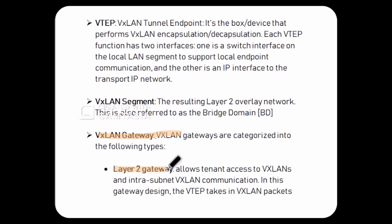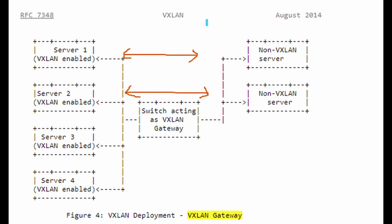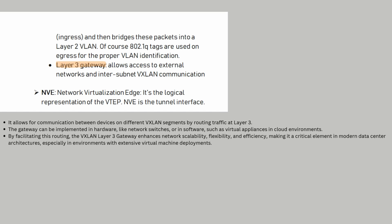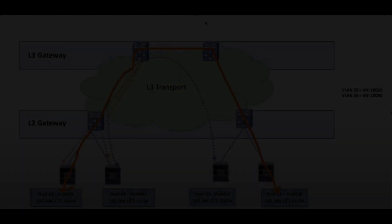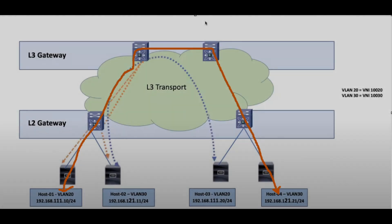Next term is VXLAN Gateway. VXLAN Gateways ko hum do types mein categorize kar sakte hain. First is Layer 2 Gateway - Layer 2 gateway hum use karte hain to communicate between VXLAN-capable devices and devices that do not support VXLAN encapsulation, for example between a device that supports VXLAN and a classical Ethernet VLAN. Then we have the Layer 3 Gateway, aur iska use hum karte hain VXLAN segments ko across communicate karane ke liye.